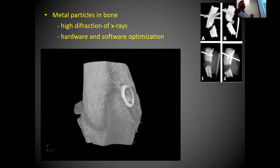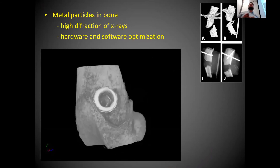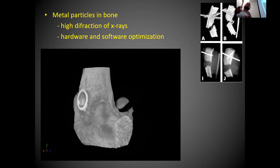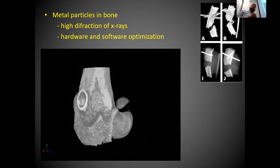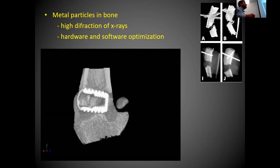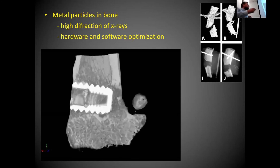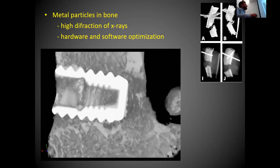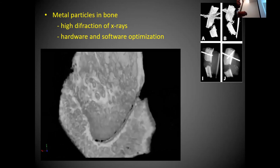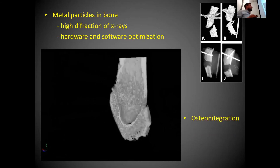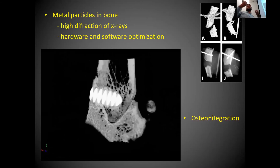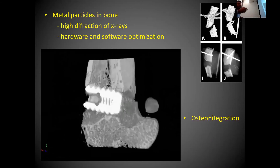Metal particles within bone can also be visualized. Metal diffracts X-rays to a much greater extent than bone, so you need to apply some optimizations during scanning and reconstruction to avoid artifacts. If the scan is good, you can clearly see whether a metal object has integrated into bone — osteointegration — and you can quantify this.